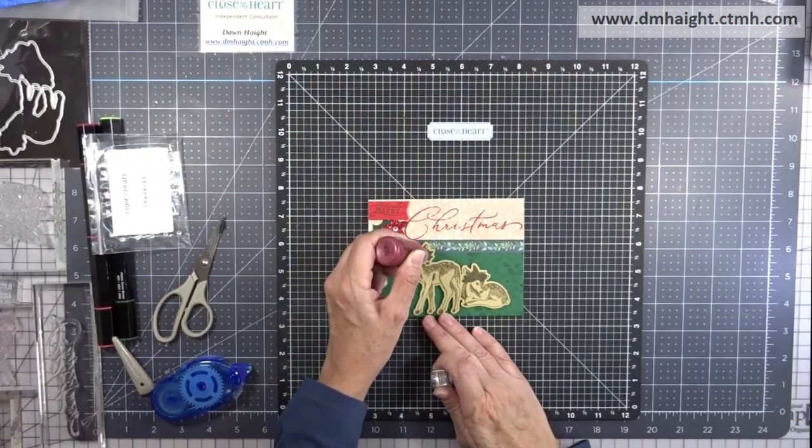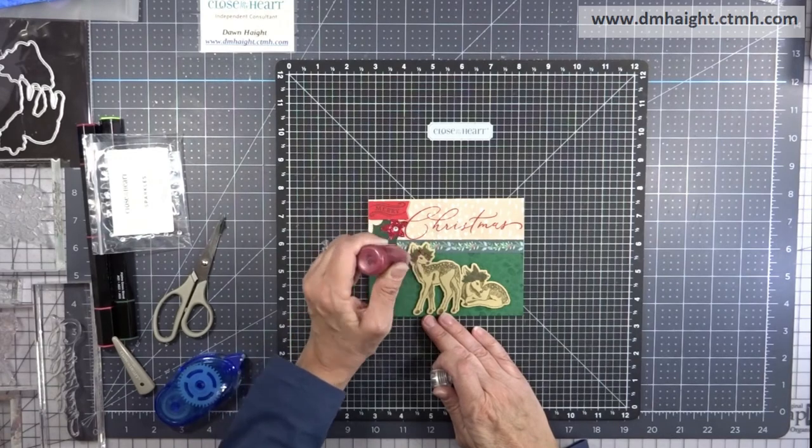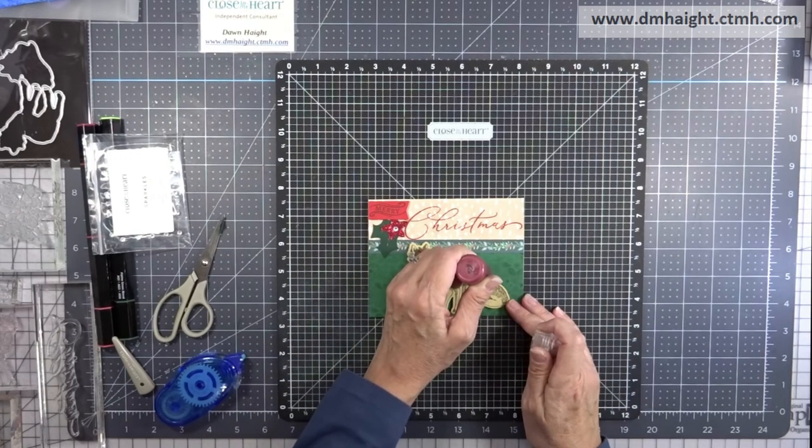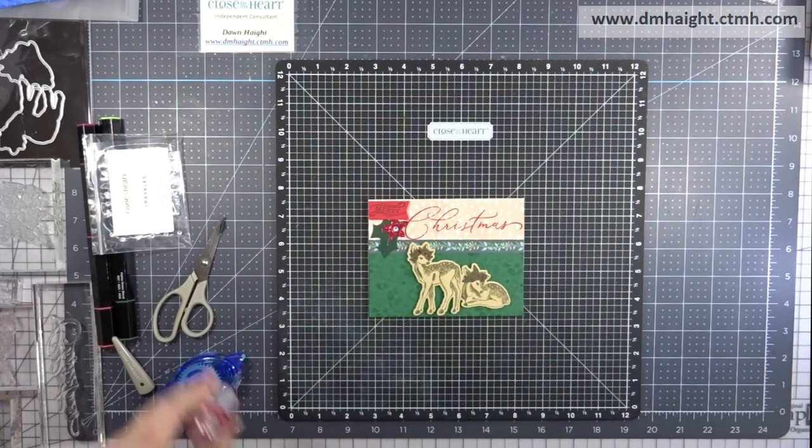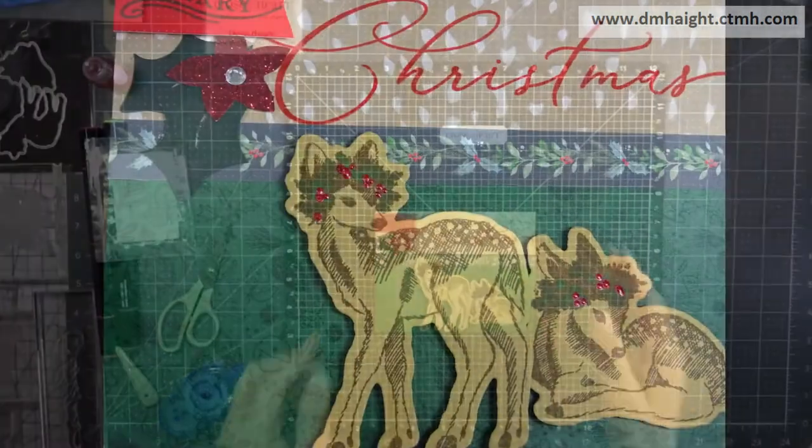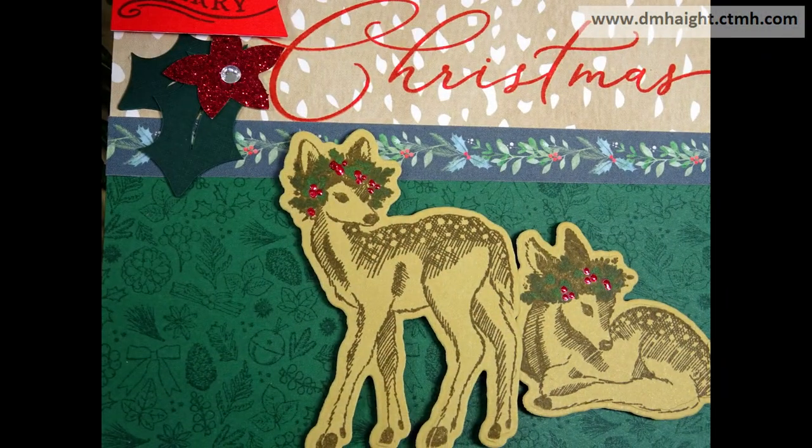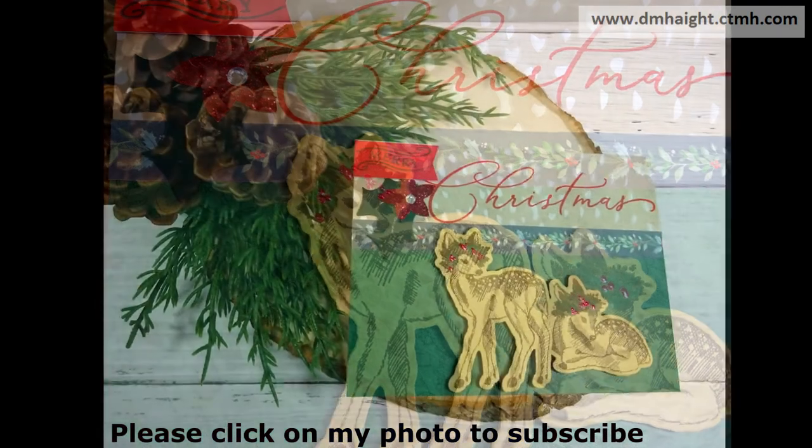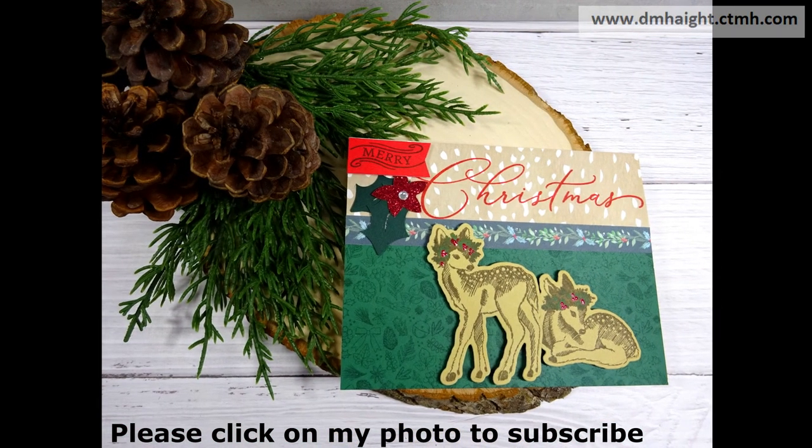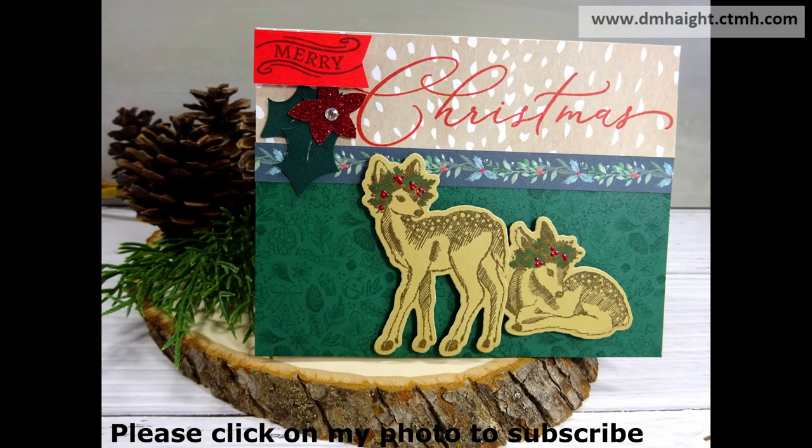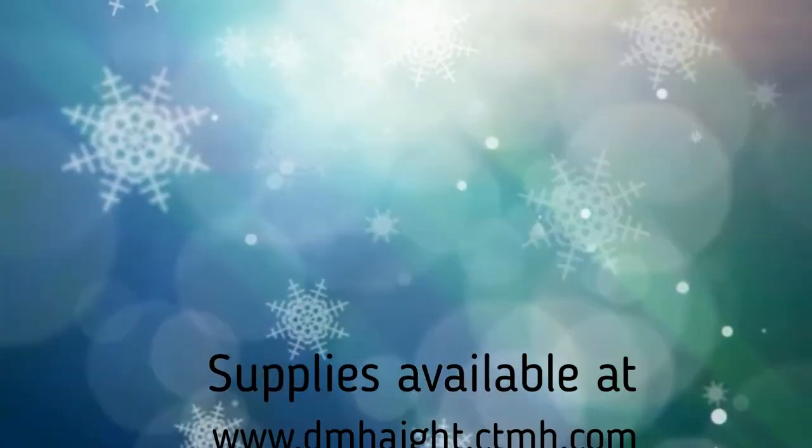And then I'm adding a clear sparkle to the center, and then I decided to bring in some liquid pearls to add a little extra dimension to those holly berries. There's my finished card. So I appreciate you watching my video today. I'll make a list of all the supplies I used with links in the description below. And if you haven't subscribed yet, please hit that subscribe button. I would really appreciate it. And thanks for watching!